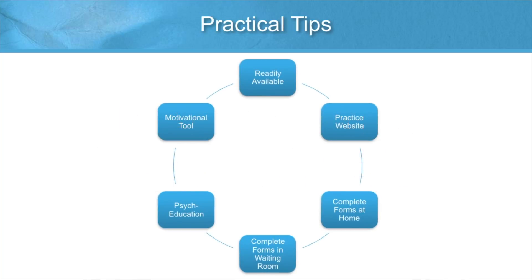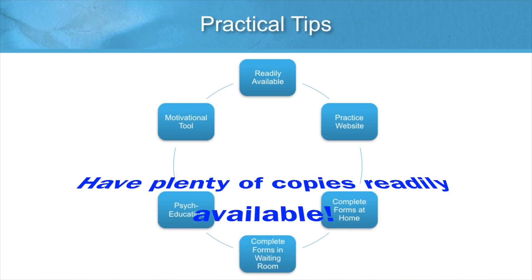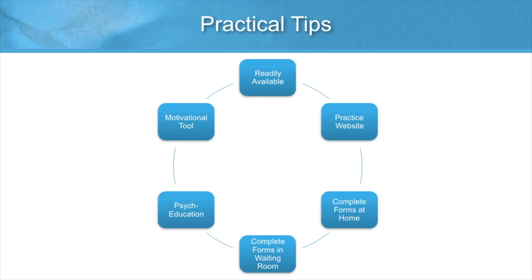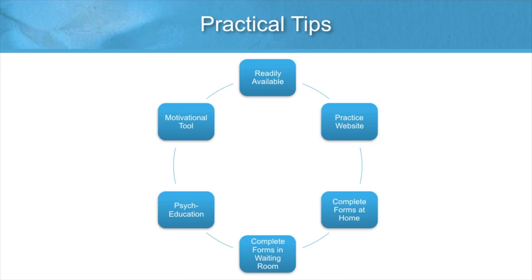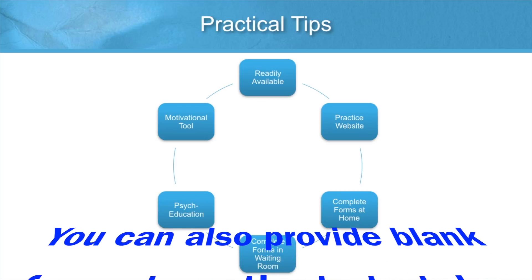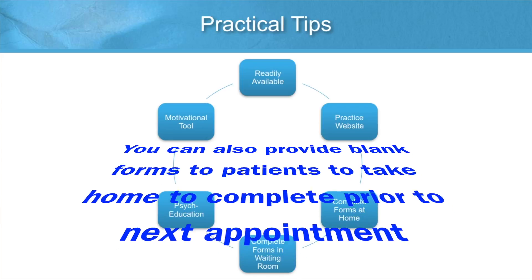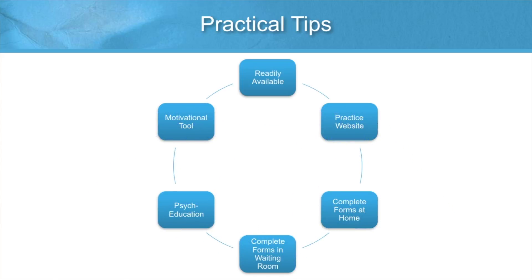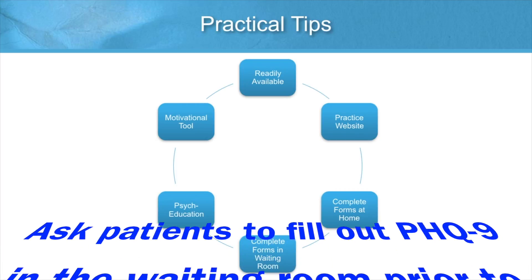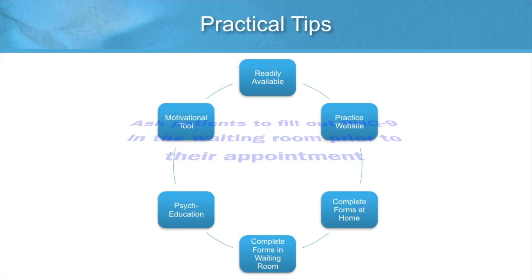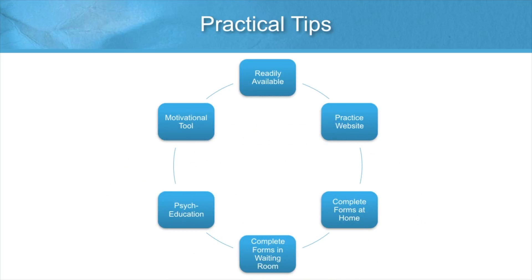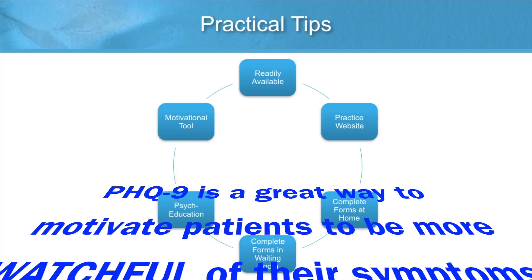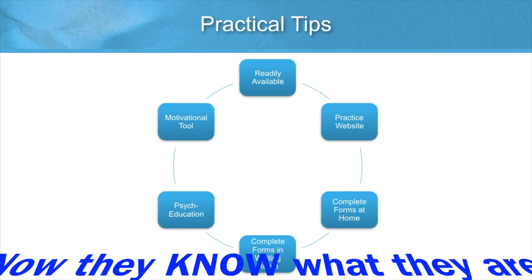Make sure that you have plenty of copies readily available and sitting in full view. When they're stuck in a file cabinet or sitting on a bookshelf, that seems to be where they stay. If you have a practice website, you may want to provide the form as a PDF download or set it up so patients can fill it out online. You can also provide blank forms to patients at the end of their session and ask them to complete it prior to their next appointment. Another easy way to integrate this tool is to ask patients to fill it out in the waiting room prior to their appointment. The PHQ-9 is a great way to engage patients in a conversation about depression because it provides them with really useful information as well as education. Plus, it can serve to motivate patients to be more watchful of their symptoms because now they know what they're looking for.